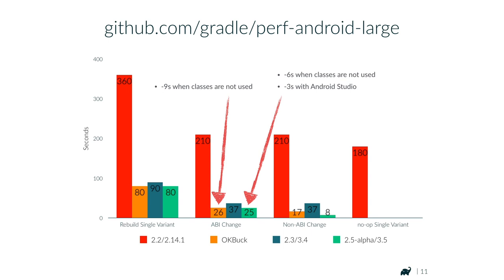For the no-op benchmark — rebuilding a single variant when nothing has changed — that takes 180 seconds with Gradle 2.2. With Buck, this took 0.8 seconds, which was 200 times faster. With 2.3, this is down to 8 seconds. With 2.5 alpha, this is down to 5 seconds. This is still a benchmark where Buck has an advantage, but it also shows the potential — we will get this further down, and it will improve the Gradle baseline for all other benchmarks.